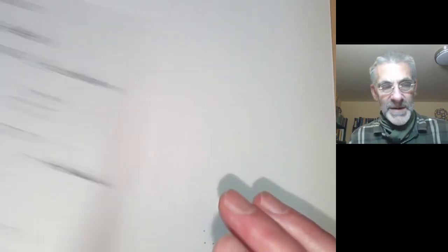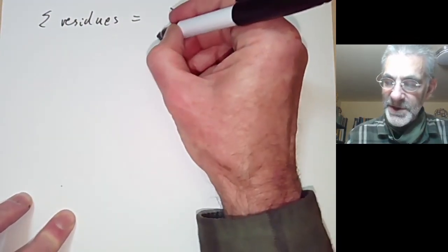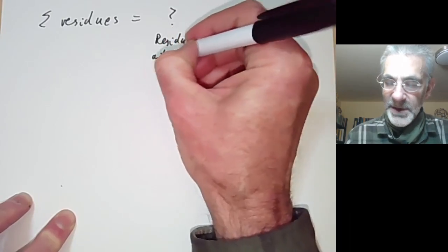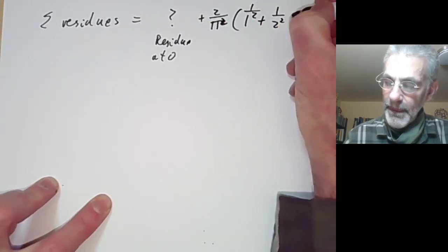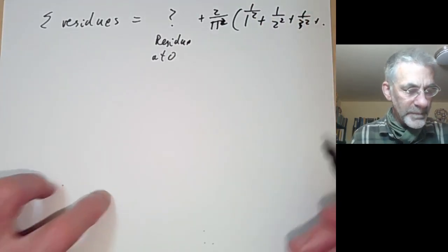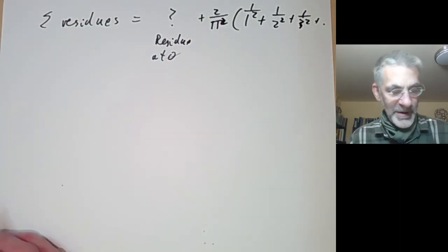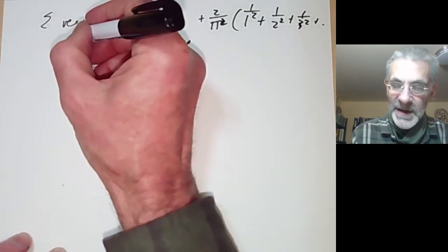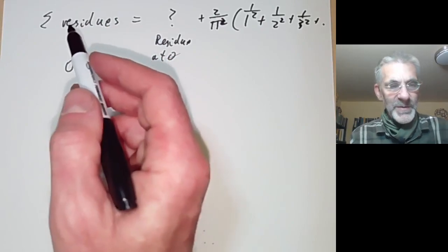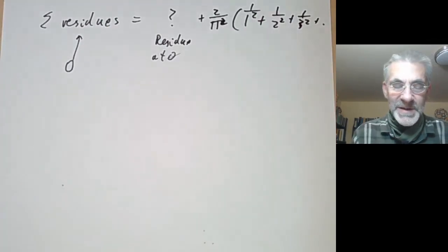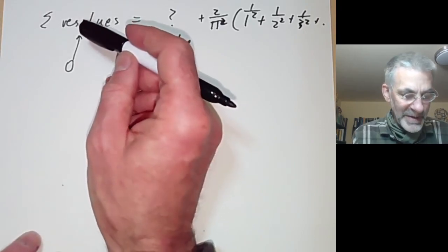The sum of all residues equals the mystery term — the residue at zero — plus 2/π² times the series we want. So we need to do two things: find the sum of the residues, and find the residue at zero. The key point is that we want to show the sum of the residues is actually zero. We're going to do this not by working out the contour integral directly, but by showing that the limit of the contour integral becomes zero, which is much easier.